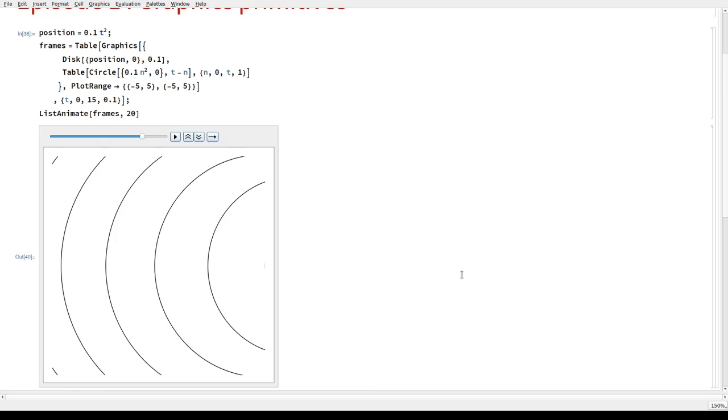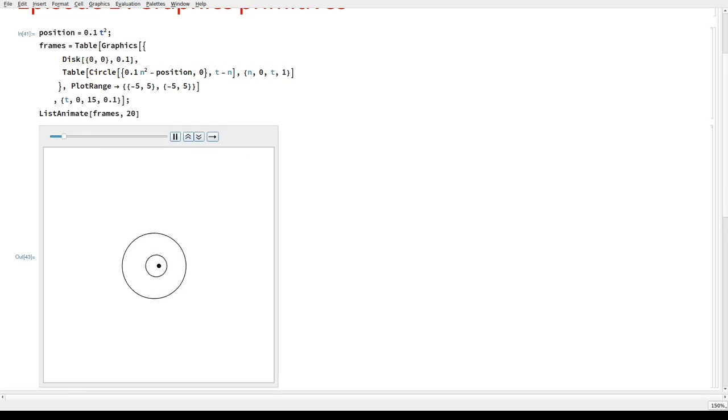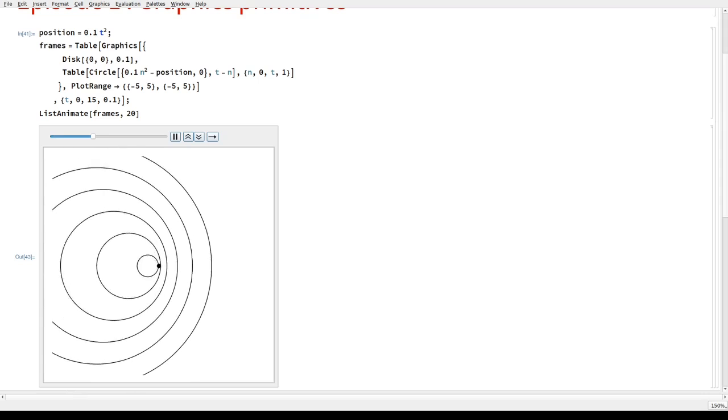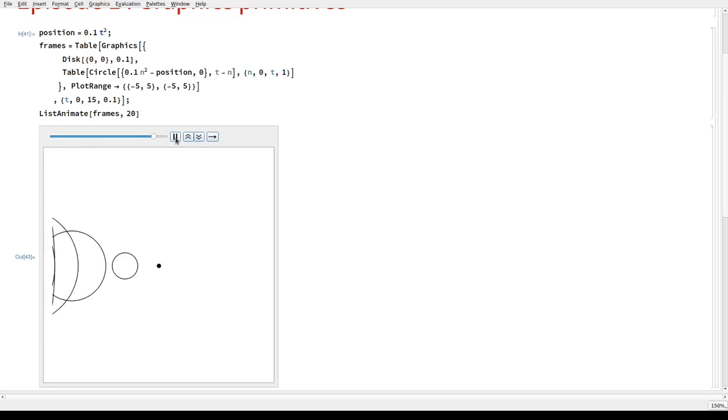So, we can either make a very long window to keep everything in there, or we can change the reference frame. We can just center the disk always at 0, 0. So, let's center this at 0, 0. And now it means that we have to subtract here.